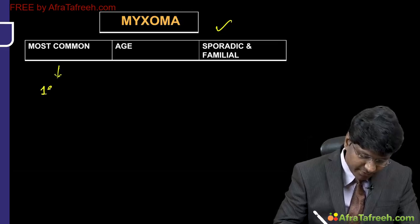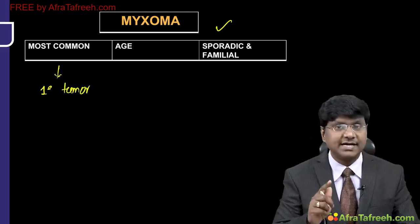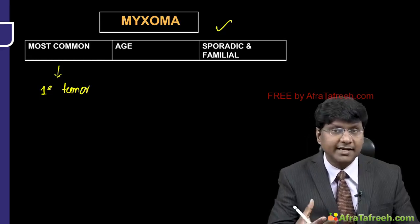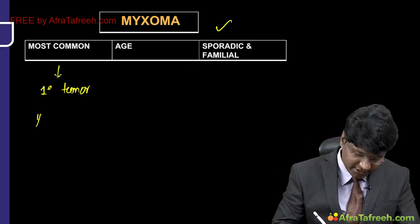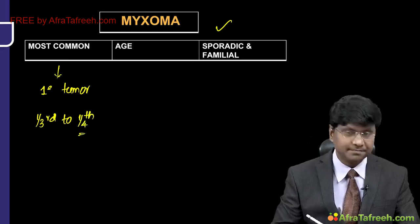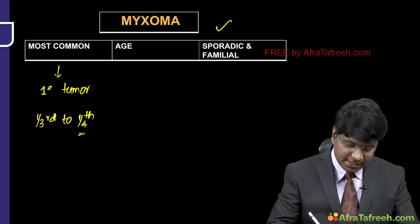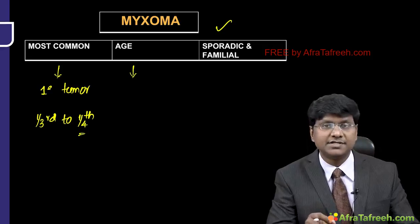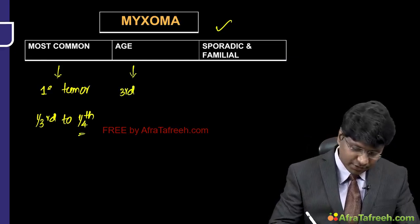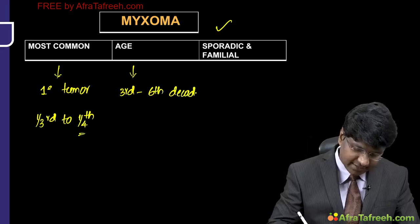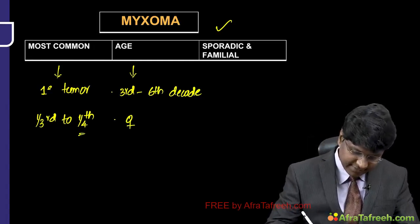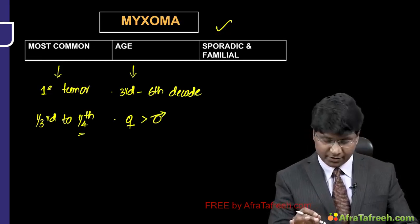Myxomas are the most common primary tumors of the heart. They are benign tumors and constitute one-third to one-fourth of all cardiac tumor cases. Clinical presentation is usually in the third to sixth decade of life. Cardiac myxomas are more common in females than in males.